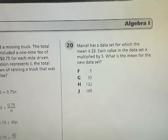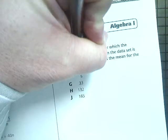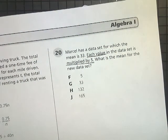Question number 20 says, Marcel has a data set for which the mean is 33. Each value in the data set is multiplied by 5. What is the mean for the new data set?